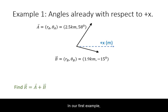In our first example, we have two displacements, and their direction relative to the positive x-axis is already given. We are asked to find their vector sum.